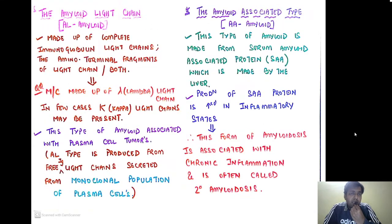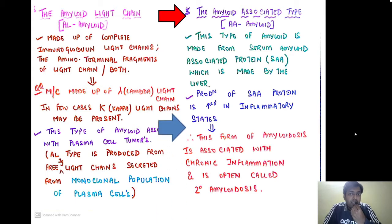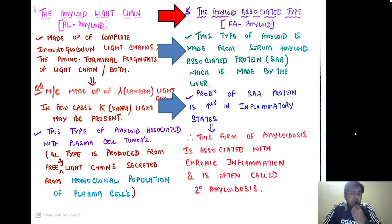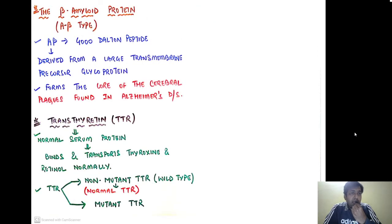The second most common type is amyloid associated (AA) amyloid. This type is made from serum amyloid associated protein (SAA), which is produced by the liver. Production of SAA is increased in inflammatory states, and this form of amyloidosis is associated with chronic inflammation — it is also often called secondary amyloidosis.